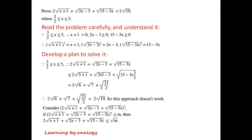So we consider [2√(x+1) + √(2x−3) + √(15−3x)]² instead. If [2√(x+1) + √(2x−3) + √(15−3x)]² ≤ m, then 2√(x+1) + √(2x−3) + √(15−3x) ≤ √m.